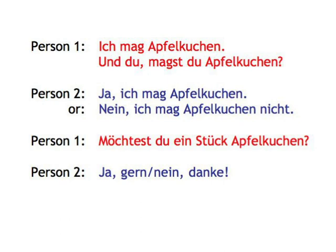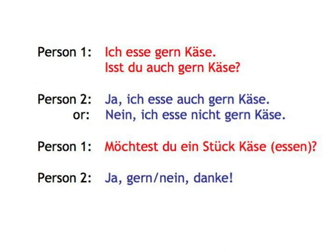So the first part of the conversation would go like this: 'Ich mag Apfelkuchen. Und du? Magst du Apfelkuchen?' — 'Ja, ich mag Apfelkuchen' or 'Nein, ich mag Apfelkuchen nicht'. In the next part of the conversation, make an offer: 'Möchtest du ein Stück Apfelkuchen?' — 'Ja, gern' or 'Nein, danke'. For activities: 'Ich esse gern Käse. Isst du auch gern Käse?' — 'Ja, ich esse auch gern Käse' or 'Nein, ich esse nicht gern Käse'. 'Möchtest du ein Stück Käse essen?' — 'Ja, gern' or 'Nein, danke'.